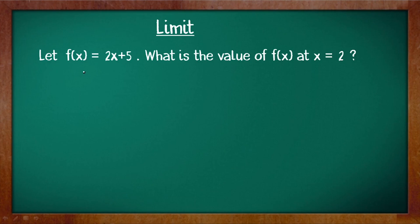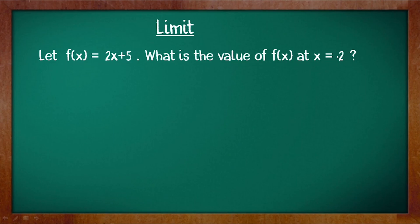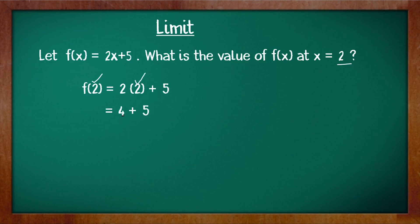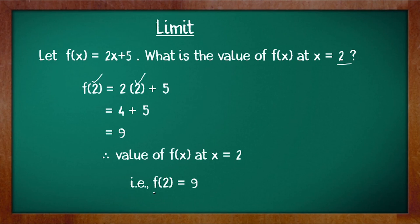Let us see the function defined as f(x) = 2x + 5, and we have to find the value of f(x) at x = 2. We'll just replace the variable x with the value 2, so f(x) = 2(2) + 5 = 4 + 5 = 9. Therefore, f(2) = 9.